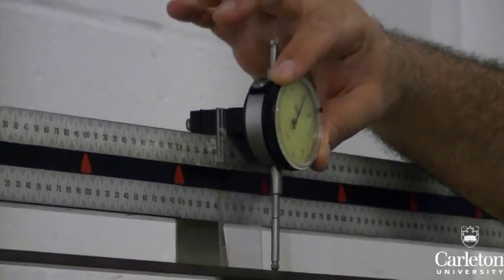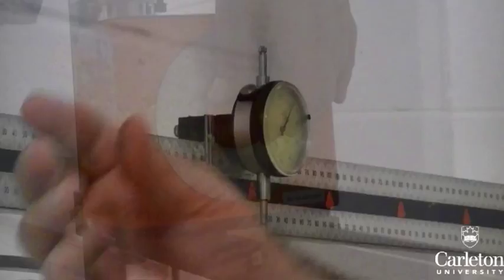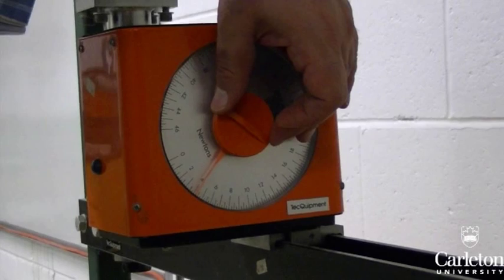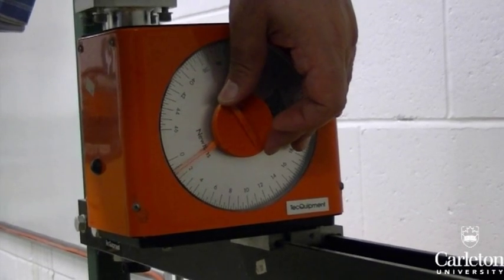All five gauges in this setup will fluctuate with changing loads. Before you begin the experiment, zero all the gauges. The displacement gauges are zeroed by turning the outside. The force gauges are zeroed by turning the knob in the middle.